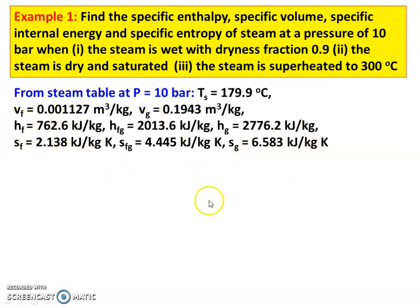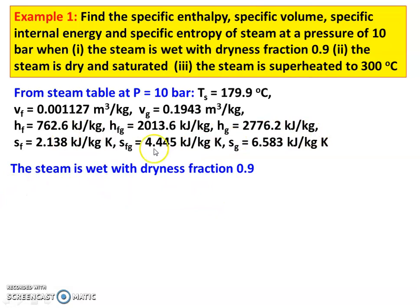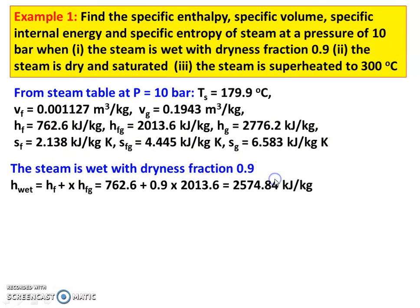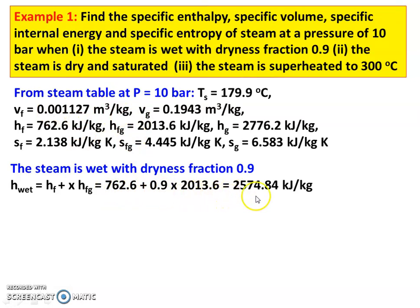We read all the properties horizontally. For the wet steam — first condition, dryness fraction 0.9 — we calculate the enthalpy of the wet steam. The equation is H_wet = HF + X·HFG. Substituting the values: 762.6 + 0.9 × 2013.6 = 2574.84 kJ/kg.